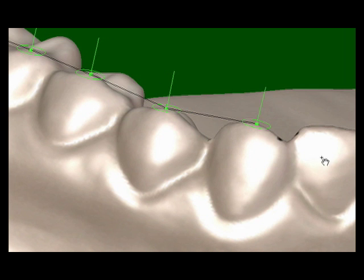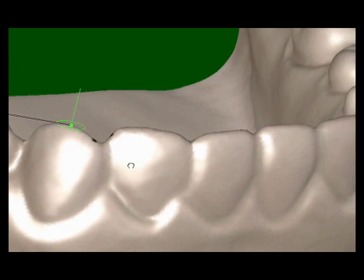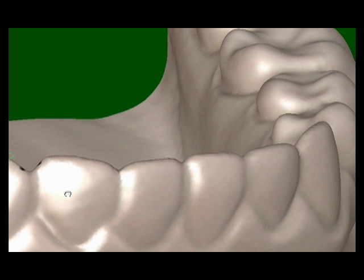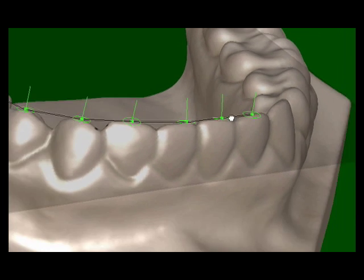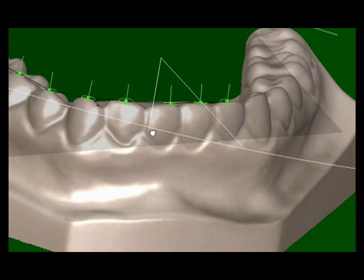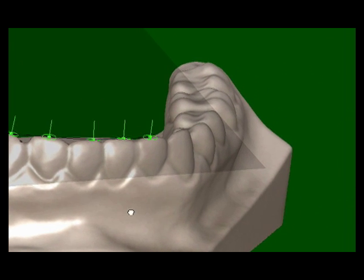An island area is defined at the contact point. A smooth plane is passed through the islands to form a contact surface. A portion of this plane becomes the splint surface.